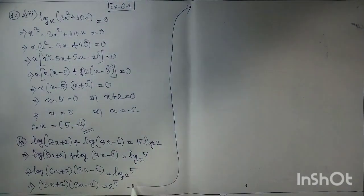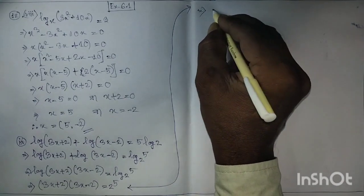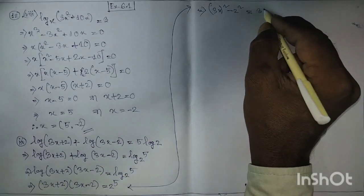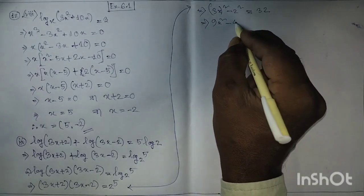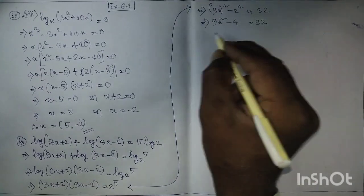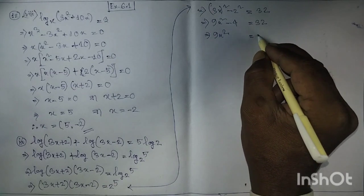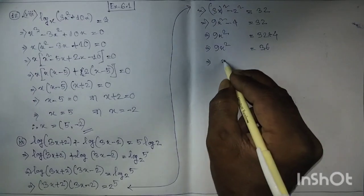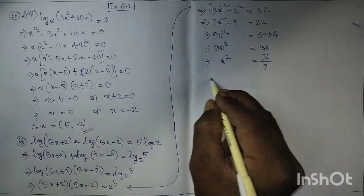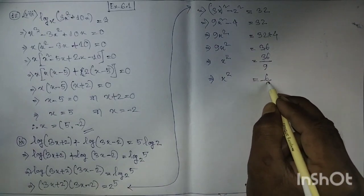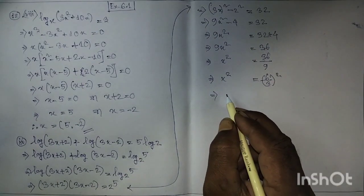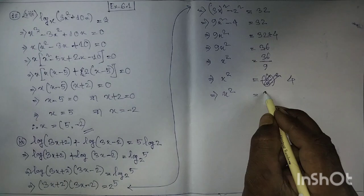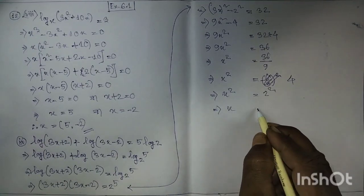Implies √(6+2) times √(6-2) equal to 2 to the power 5, which implies (3x)² minus 2² equal to 32. This gives 9x² minus 4 equal to 32, implies 9x² equal to 36, therefore x² equal to 36 divided by 9, giving x² equal to 4.